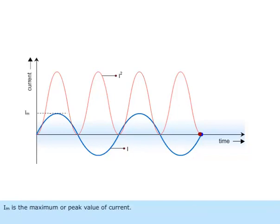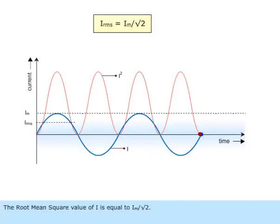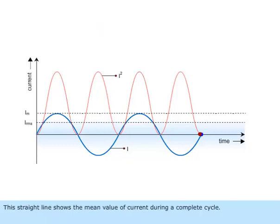I sub m is the maximum or peak value of current. The root mean square value of I is equal to I sub m over root 2. This straight line shows the mean value of current during a complete cycle.